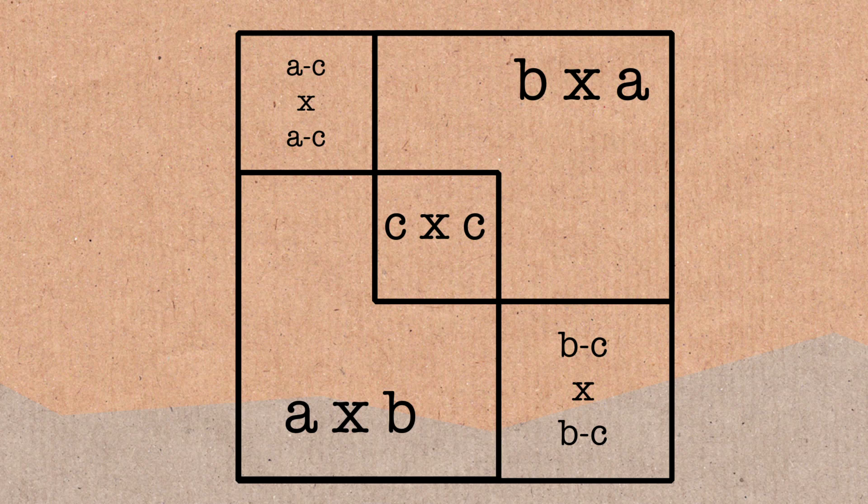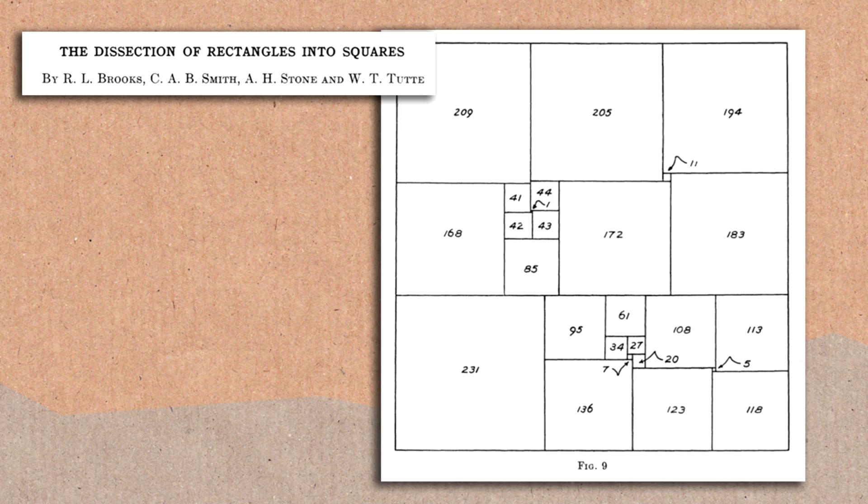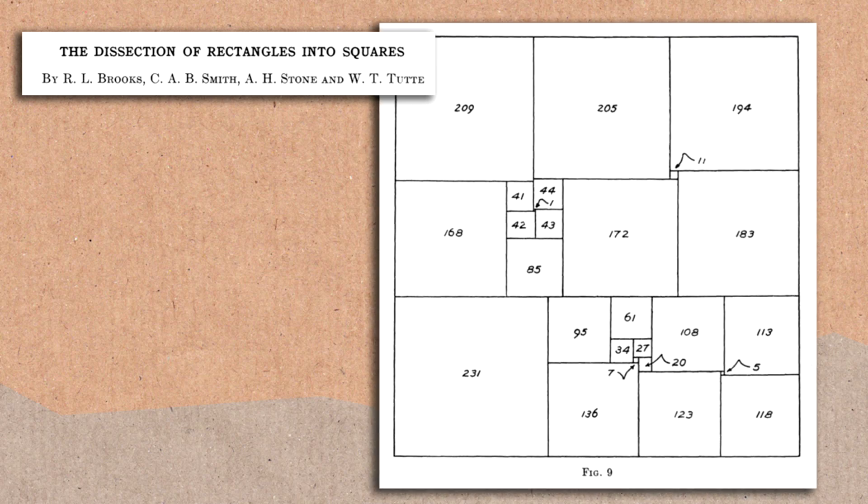And they finally found one. The first squared square. It was massive, the first one they found. It used 55 squares, and then they started to improve it. They wanted to find smaller ones. They found one that used 38. Bill Tutte found one that used 26, and these were getting better. And the question was, what's the smallest squared square?